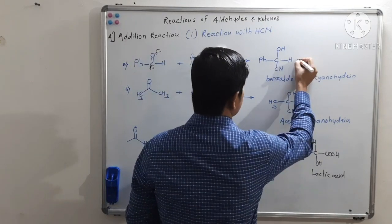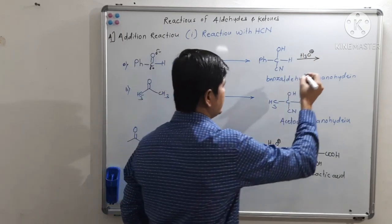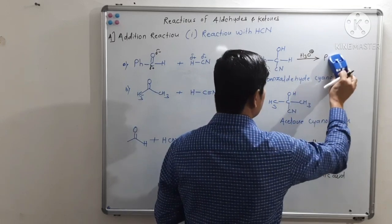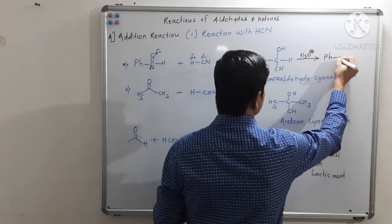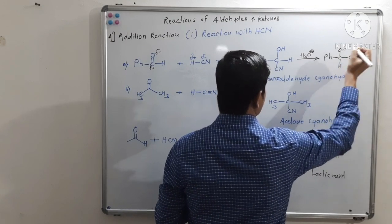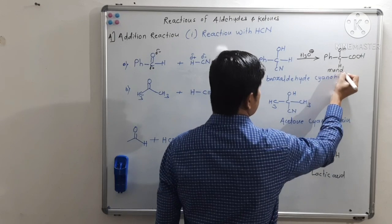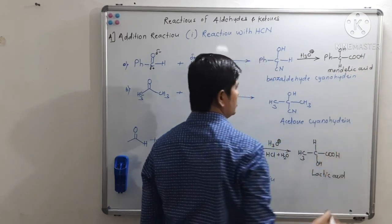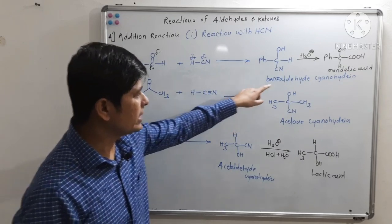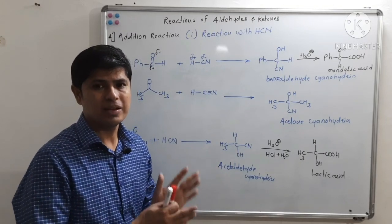Similarly, if we hydrolyze benzaldehyde cyanohydrin, we get a carboxylic acid called mandelic acid. Mandelic acid is a useful acid in the synthesis of some drug intermediates. So we can get mandelic acid from benzaldehyde through reaction with hydrogen cyanide.